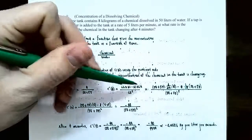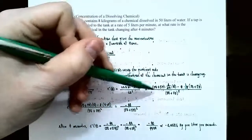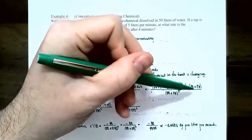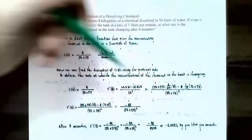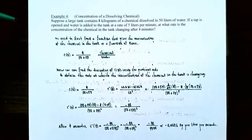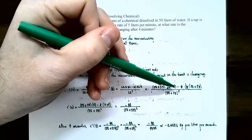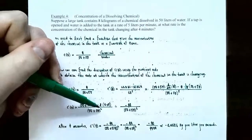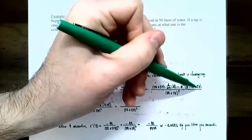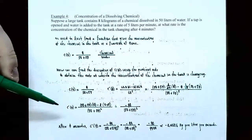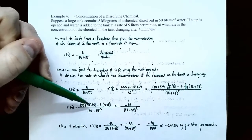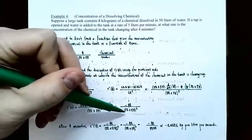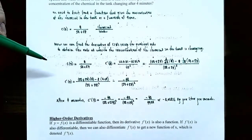C prime of t is low d high minus high d low over low squared. The denominator is 50 plus 5t, times the derivative of 8 — which is 0 — minus 8 times the derivative of 50 plus 5t — which is 5 — all divided by 50 plus 5t, all squared. The first term cancels out entirely, and the numerator simplifies to negative 8 times 5, which is negative 40. So c prime of t equals negative 40, divided by 50 plus 5t, all squared.